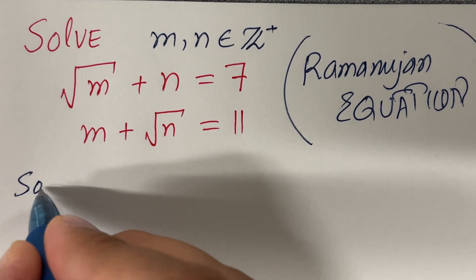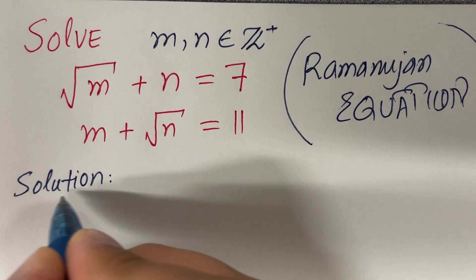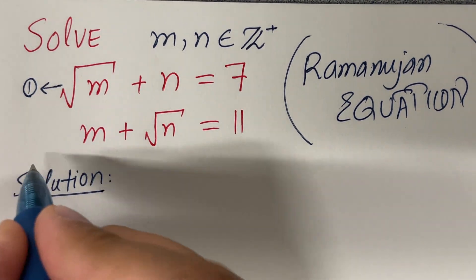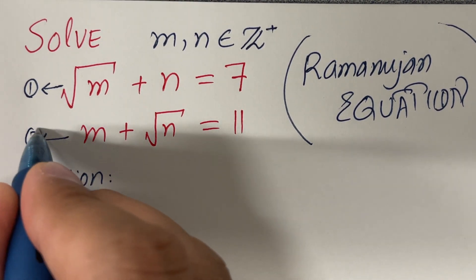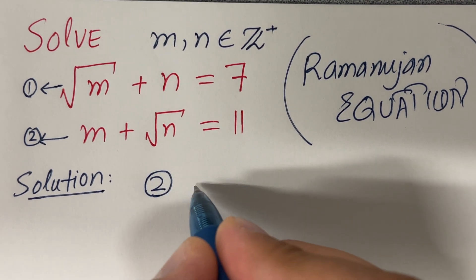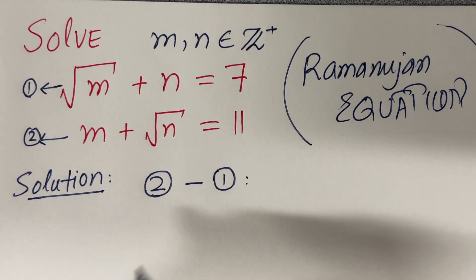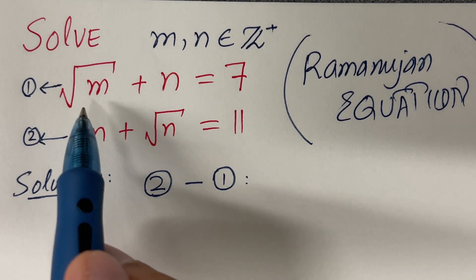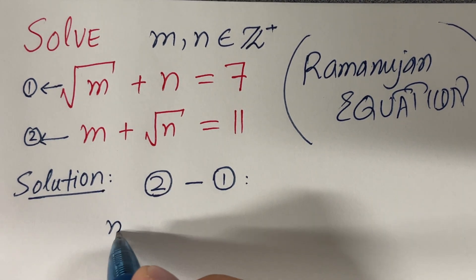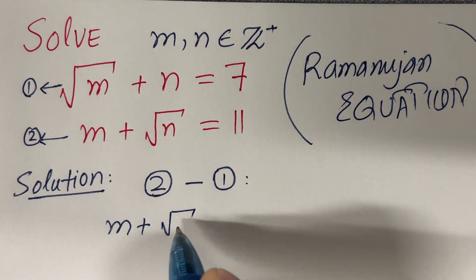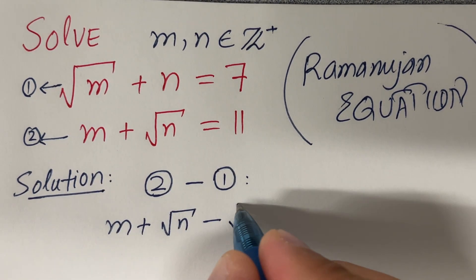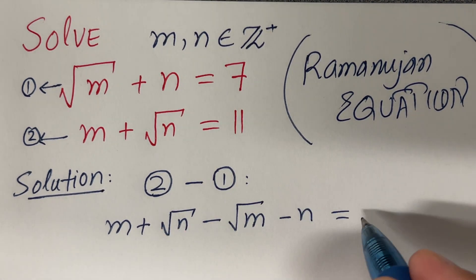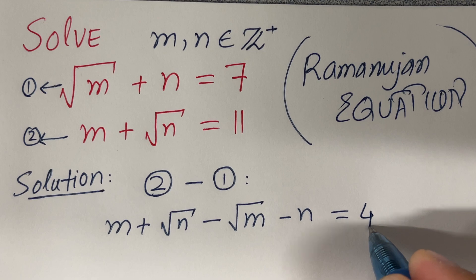Let's start our solution. Let me call this equation 1 and this equation 2. What I am going to do is subtract equation 1 from equation 2. Then we will have: since I am subtracting 1 from 2, I will have (m + √n) minus (√m - n) equal to 11 minus 7, which equals 4.